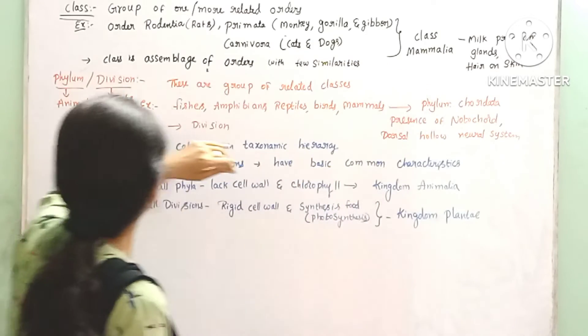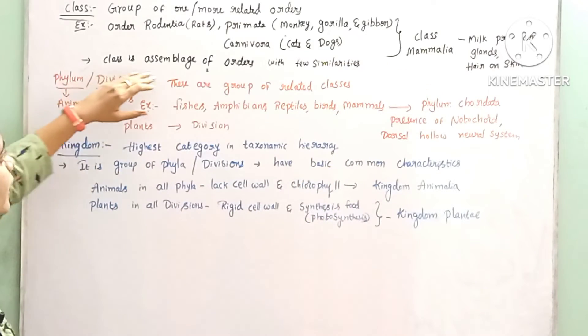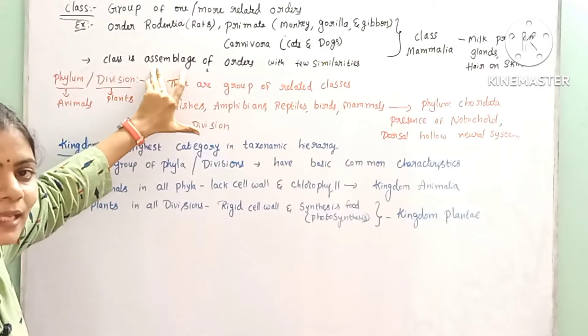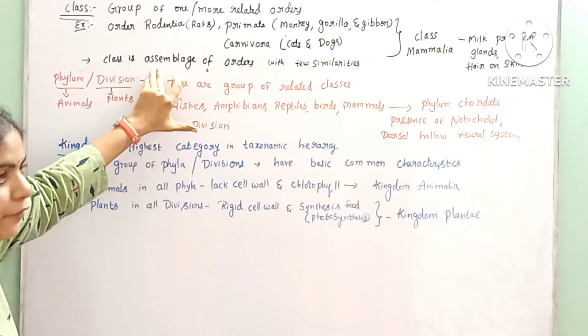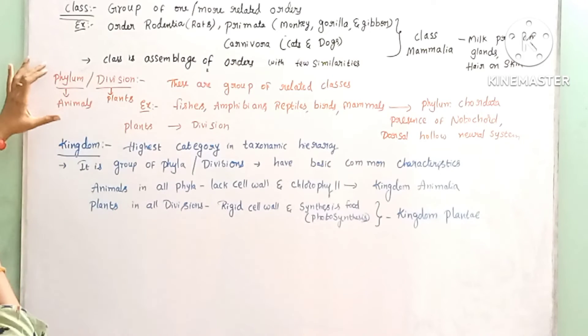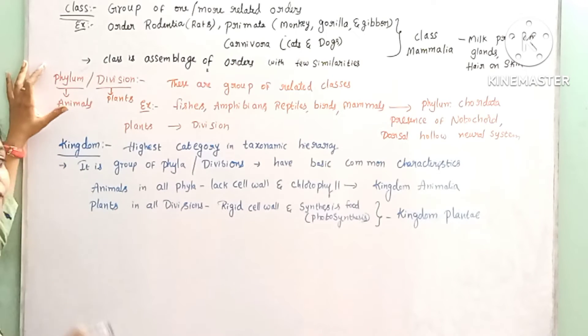Cats and dogs under order Carnivora were kept under the class Mammalia, because they have milk-producing glands and hair on their skin. These characters are used to place animals in the class Mammalia.